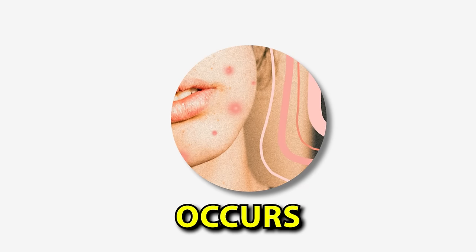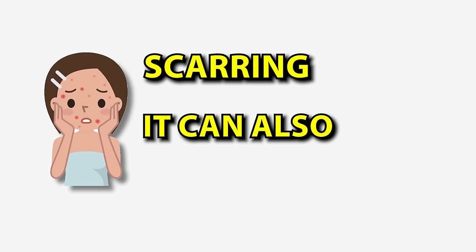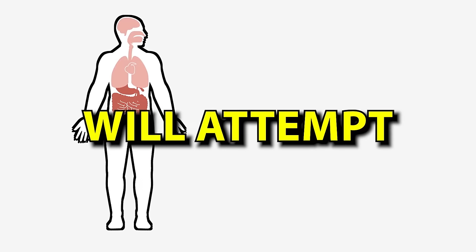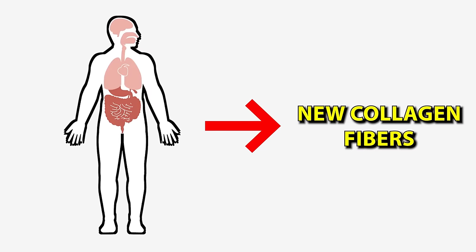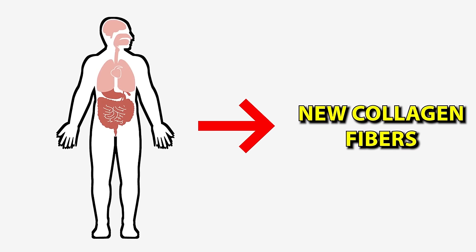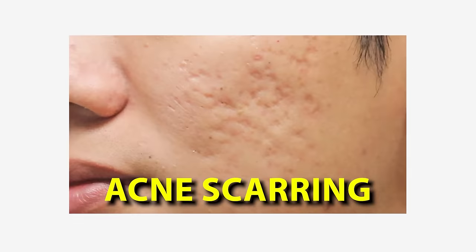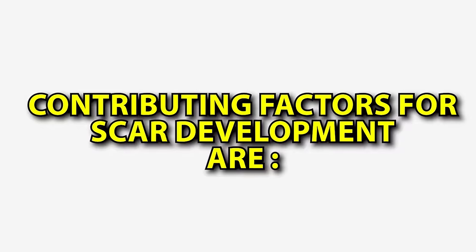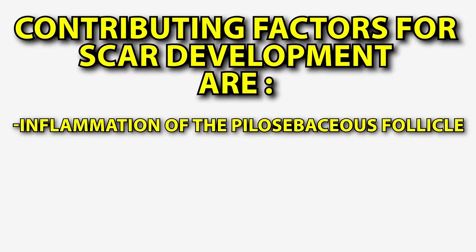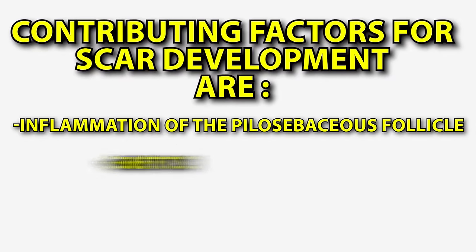Acne is a skin condition that occurs when hair follicles under the skin become clogged. Scarring occurs mostly in patients with severe or very severe acne, but it can also occur in patients with mild acne. If you have deeper acne lesions, your body will attempt to repair them by forming new collagen fibers. These repairs usually aren't as smooth as the original ones, causing acne scarring. Tissue loss alone can also cause acne scarring. Contributing factors for scar development are inflammation of the pilosebaceous follicle, genetics, and the acne location and duration.